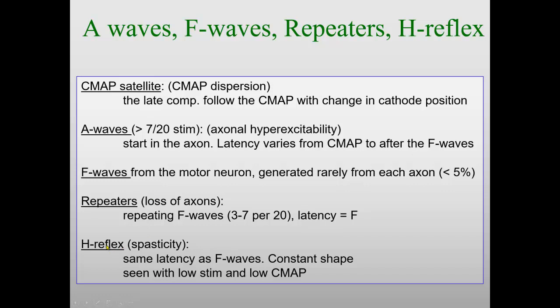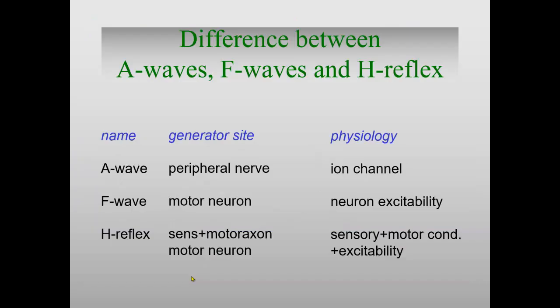The H-reflex is what we look at when we have spasticity or proximal sensory involvement. It has constant shape and latency, we see it with low stimulation when CMAP amplitude is low, and it disappears with high stimulus — and it must be a slow stimulation rate. So the difference between them: A-waves come from the peripheral nerve, probably from ion channel trouble. F-waves come from the motor neuron and look at motor neuron excitability. H-reflex takes care of both the sensory-motor axon conduction and the excitability of the motor neuron — useful in central disorders but also in some radiculopathies. That was all for today. Thank you very much.